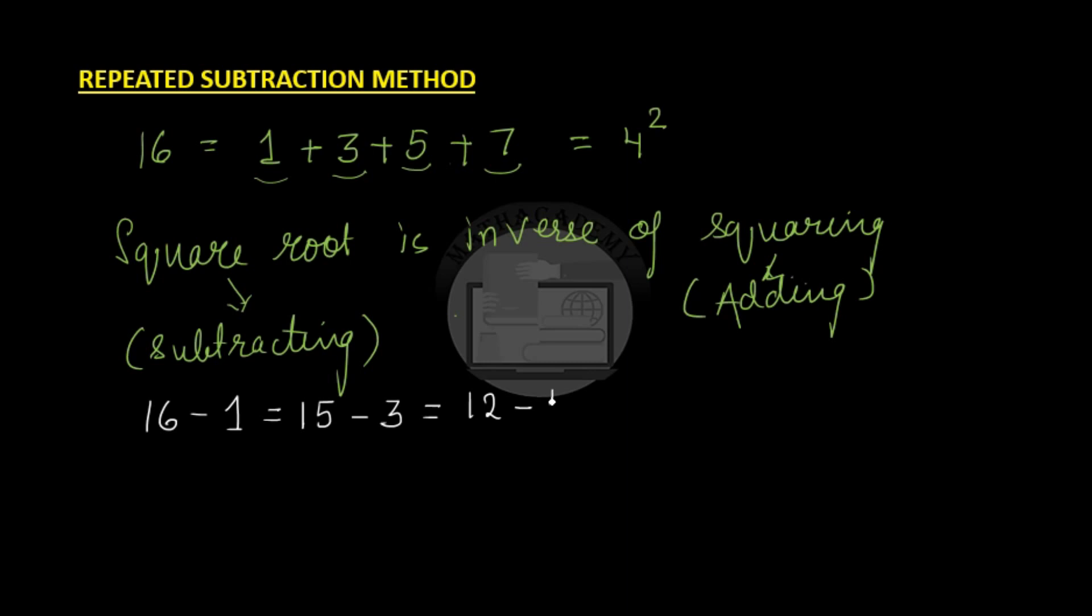We have to keep subtracting till we get zero. Now see how many steps you are taking to reach zero. This is step 1, step 2, step 3, and step 4. Hence, square root of 16 is 4.